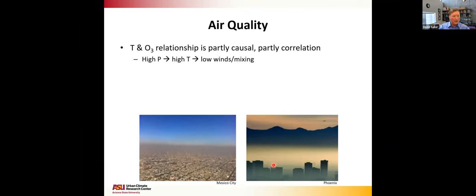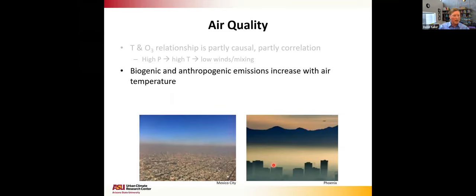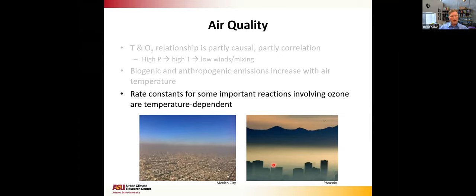Air quality is a little more complicated. Plots of photochemical smog or ozone as a function of temperature show a very strong correlation — some causal, some correlational. Highest temperature events tend to be associated with high pressure, low winds, and low mixing, concentrating ozone. But as you increase temperature, biogenic and anthropogenic emissions increase, and some rate constants for ozone production and destruction are temperature dependent. Generally, it is believed that decreasing city air temperatures should also help clean the air.